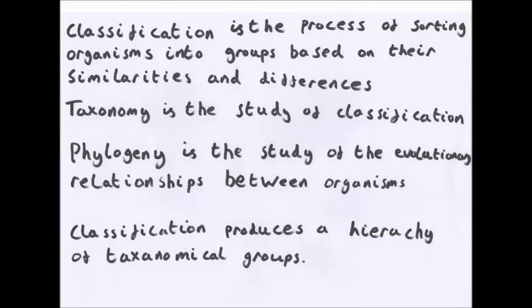Firstly some definitions. One of these almost certainly will come up in the exams, not too bad though. Classification is the process of sorting organisms into groups based on their similarities and differences. Simple. Taxonomy is the study of classification and phylogeny is the study of the evolutionary relationships between organisms. Classification produces a hierarchy of taxonomical groups.